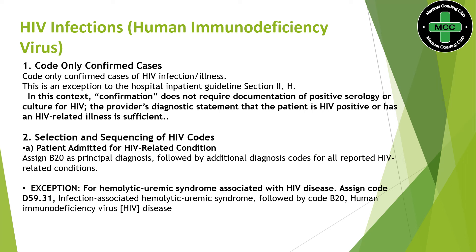Next, selection and sequencing of HIV codes. When a patient is admitted for an HIV-related condition, we will be assigning B20 as a primary diagnosis and whatever the associated condition is, we will list it secondary.